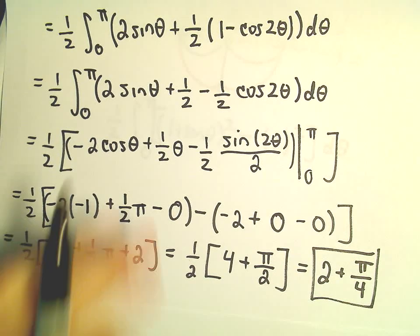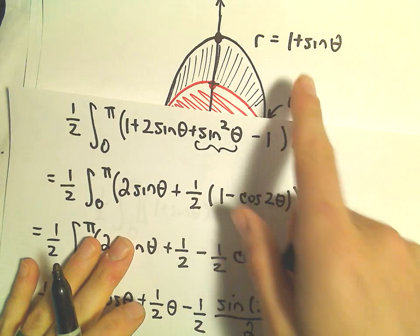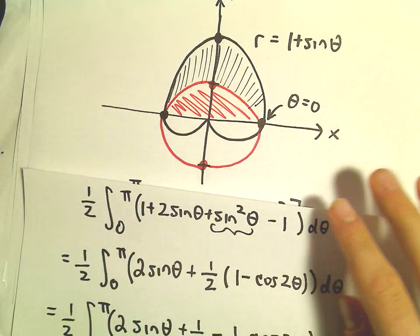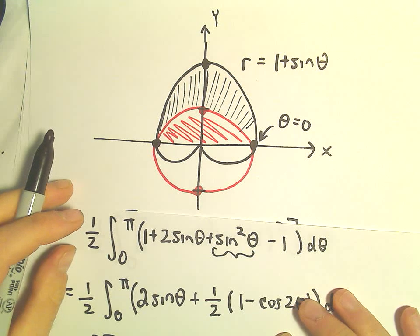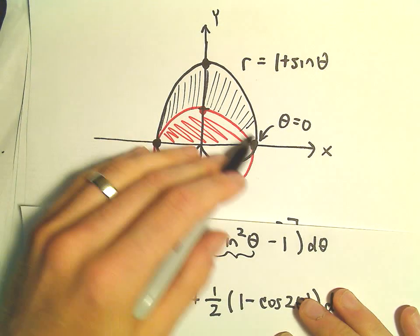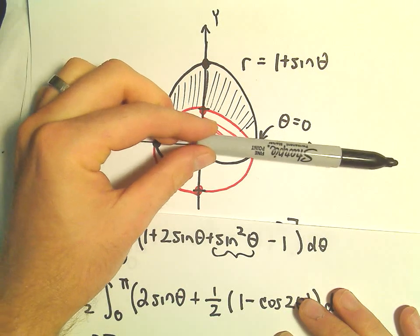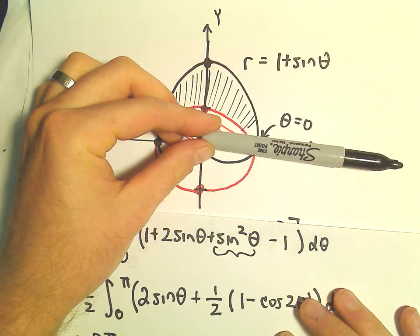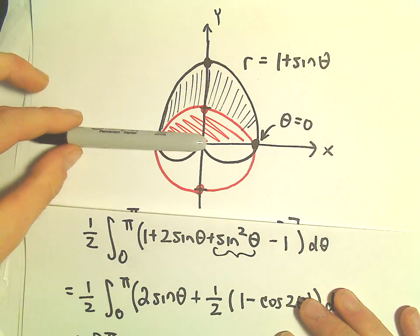Alright, that's all there is to it. Again, I think to find the points of intersection, of course, you could have set the curves equal. But I usually like to try to do a little polar graph, at least get a rough idea for what's going on. And here it's pretty easy to see that the points of intersection are going to correspond to theta equals 0 and then over here at theta equals pi.